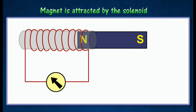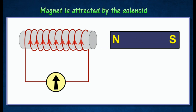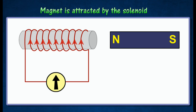This is achieved if the direction of the induced current creates a south pole at the end of the solenoid closest to the departing magnet, as the induced south pole tends to attract the departing north pole.